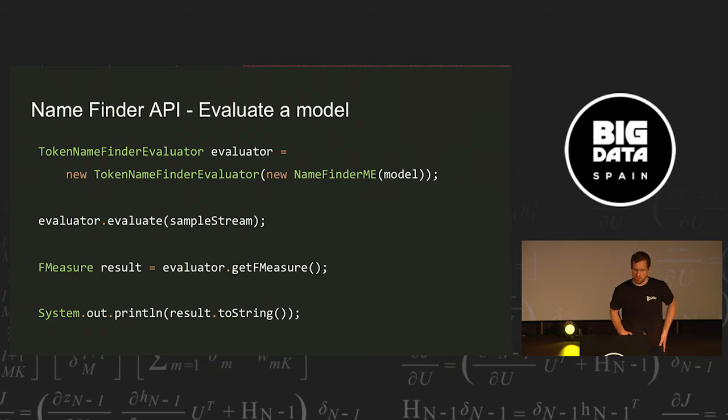So now that we have trained the model, we want to evaluate the model, and for evaluation, we need the model. We set up the name finder ME instance, we now load the evaluation data, we have a sample stream again, we pass this to the evaluate method, then this would run over the data, it can count out the mistakes as the name finder does, and then it would give us a so-called F measure, which contains precision and recall score, and we print it out.